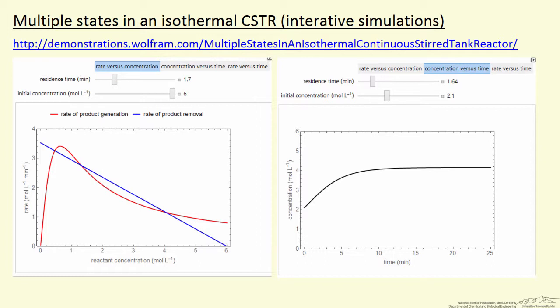I'm going to describe an interactive simulation for an isothermal continuous stirred tank reactor in which multiple steady states can exist even though it's isothermal, because the rate of reaction is non-linear.